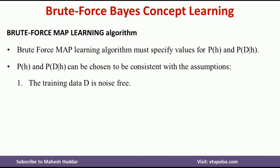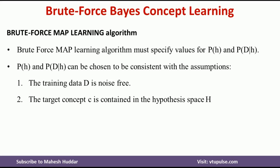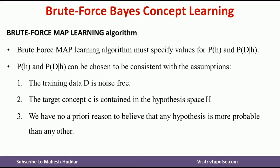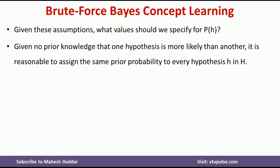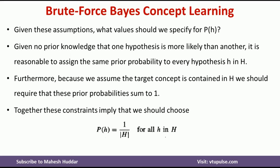What we can do is assume certain conditions: the training data is noise-free, the target concept C is contained in the hypothesis space H, and we have no prior reason to believe any hypothesis is more probable than any other. Given these conditions, we can calculate the posterior probability with minimum computation. Since there is no prior knowledge that one hypothesis is more likely than another, every hypothesis has equal probability. Hence, P(H) — the prior probability — equals 1 divided by the cardinality of H, where the cardinality of H is the size of the hypothesis space.